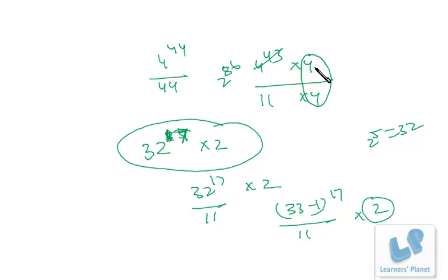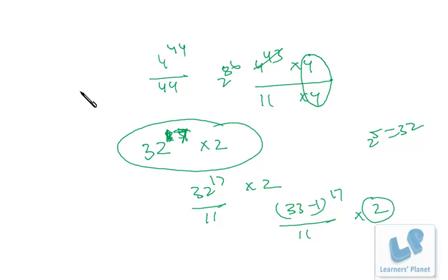We had taken 4 as the common factor earlier. So the actual remainder when 4^44 is divided by 44 is 9 × 4 = 36.